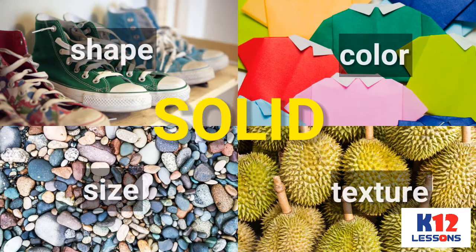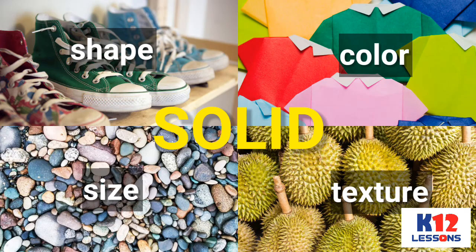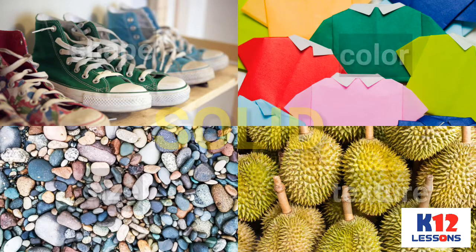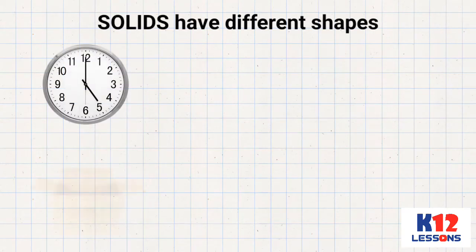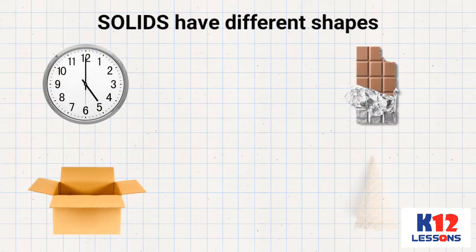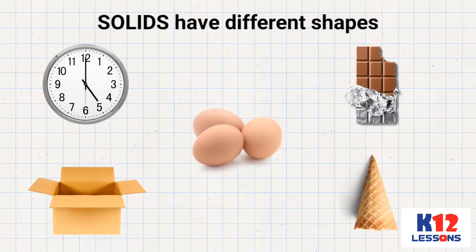Solid has shape, size, color, and texture. Solids have different shapes such as round, square, rectangle, triangle, and oblong.